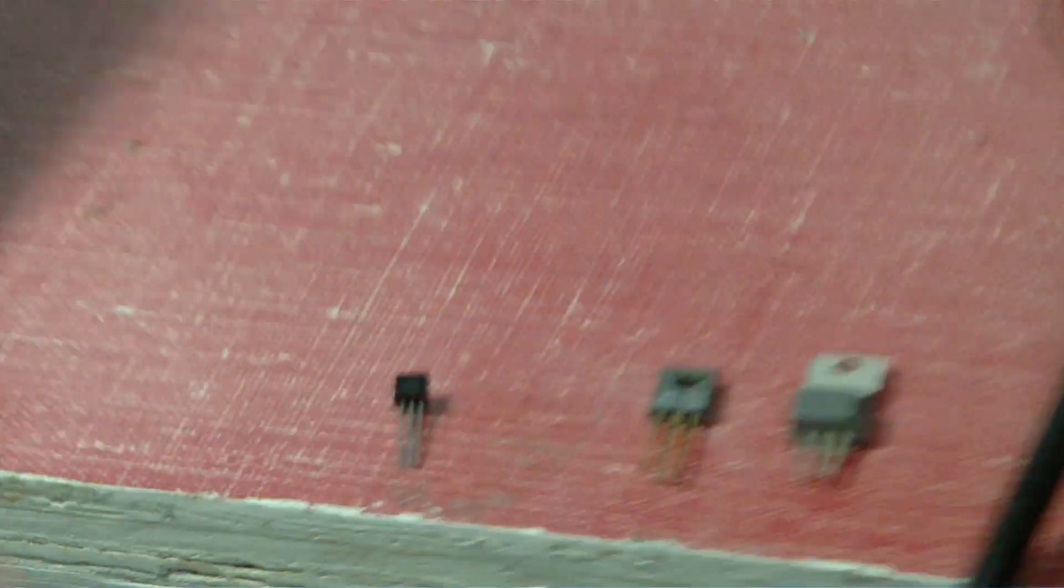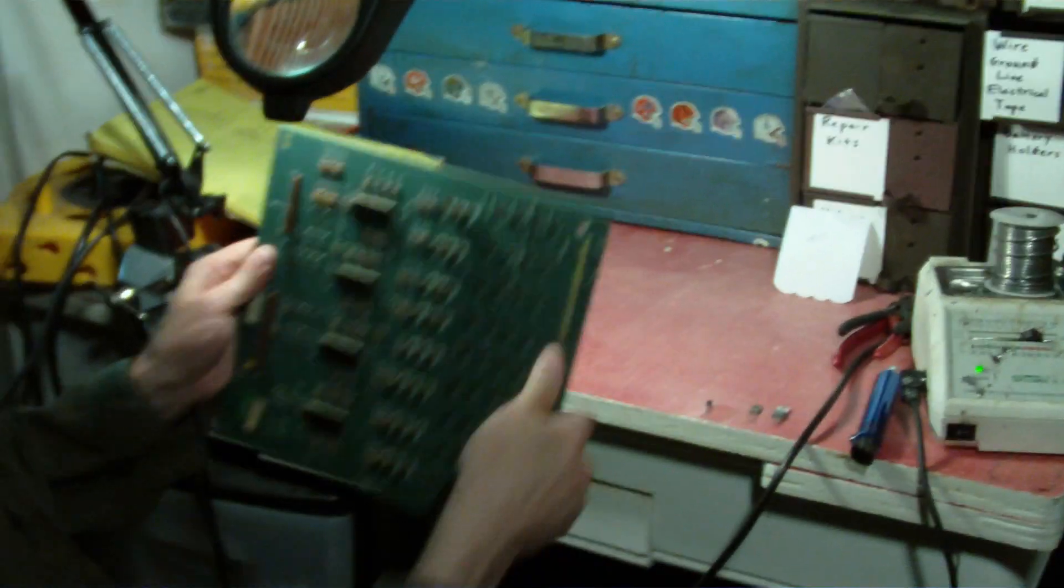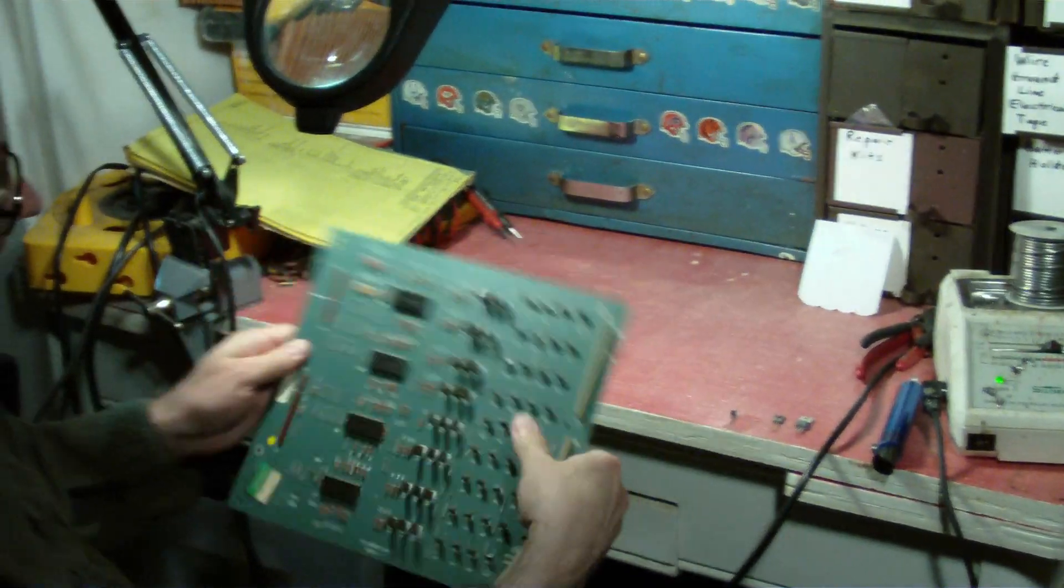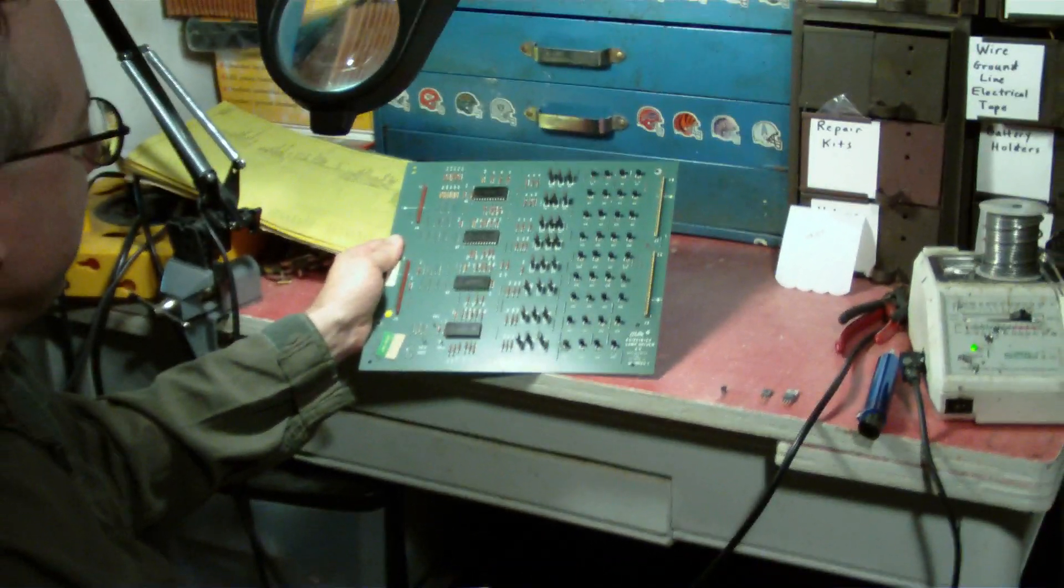So what we're going to do is, basically I've got my solder sucker here and the soldering iron ready to go. We're going to pull the solder off of these two transistors, put the new ones in, solder them up, put it on the tester, verify that everything's okay and we'll be good to go.